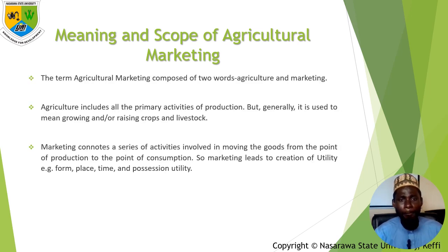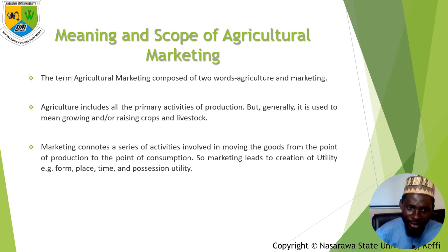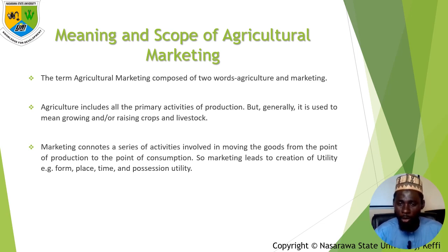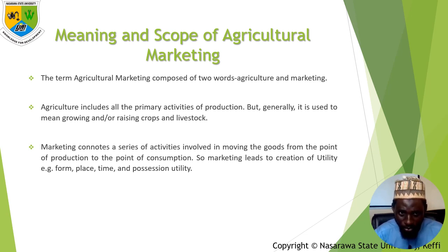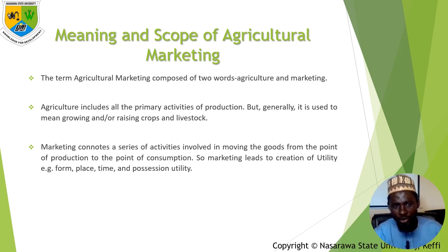Let's look at the meaning of marketing and most importantly agricultural marketing. The term agricultural marketing is composed of two words — agriculture on the one hand and marketing on the other. Agriculture includes all the primary activities of production, meaning the production of crops and the rearing of animals for the benefit of man. While marketing is concerned with the activities that involve the forward or onward movement of goods from the point of production up to the point of consumption.